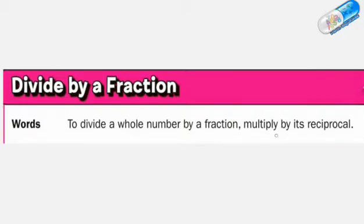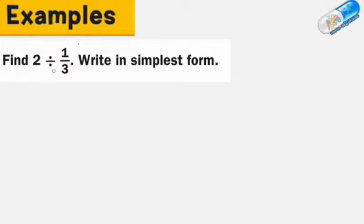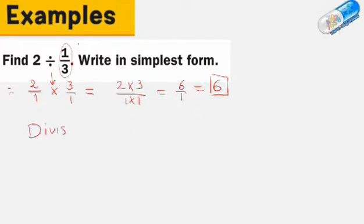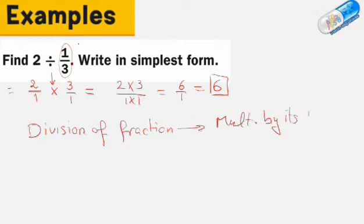To divide a whole number by a fraction, we multiply by its reciprocal. Here is an example: 2 divided by 1 third — find the quotient and write it in simplest form. We write 2 as 2 over 1, then transform the division into multiplication and write the fraction after the division sign as its reciprocal. So we get 2 times 3 over 1 times 1, which equals 6 over 1, which is 6. Remember this rule: division of a fraction is multiplication by its reciprocal.